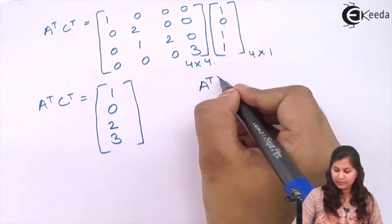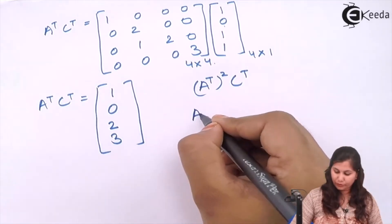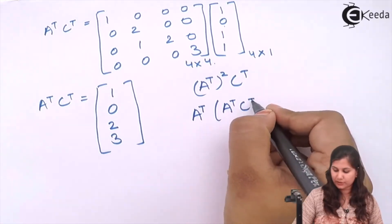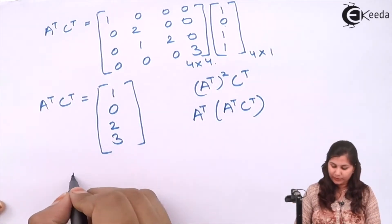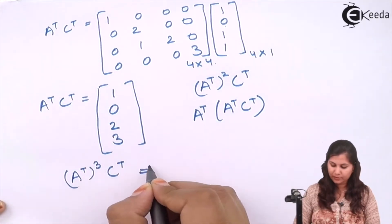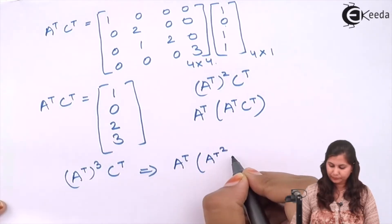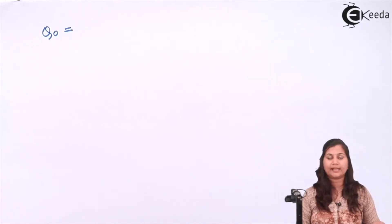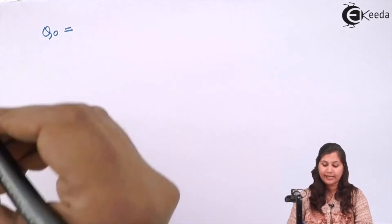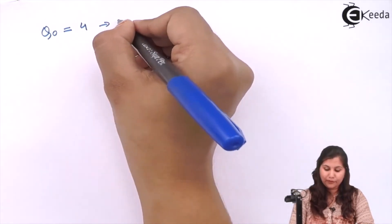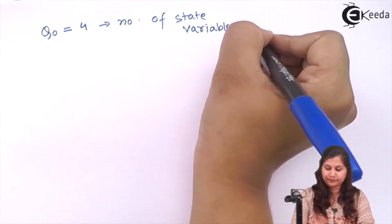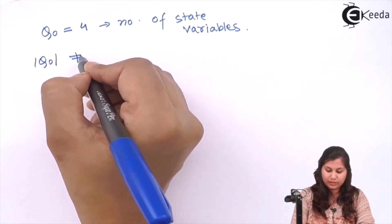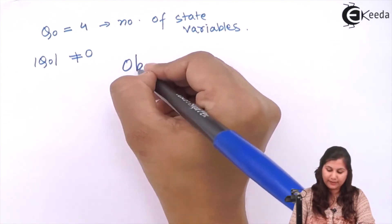Similarly, (A^T)²·C^T is calculated by multiplying A^T with the already-computed A^T·C^T. Then (A^T)³·C^T is computed the same way. These results give us the complete observability matrix Q0. We then check the rank of Q0. Here the determinant of Q0 is not equal to zero and the rank is coming out to be 4, so the system is observable.